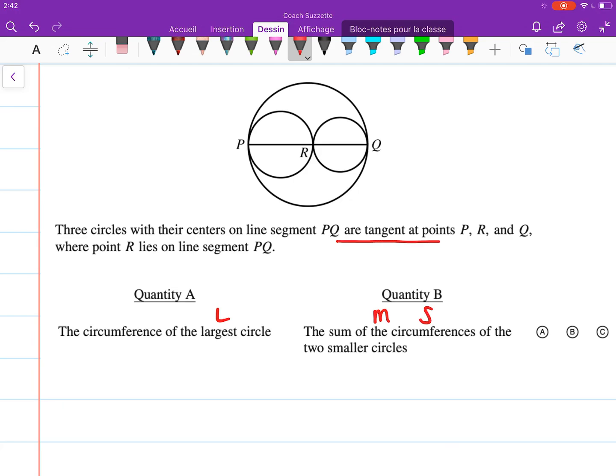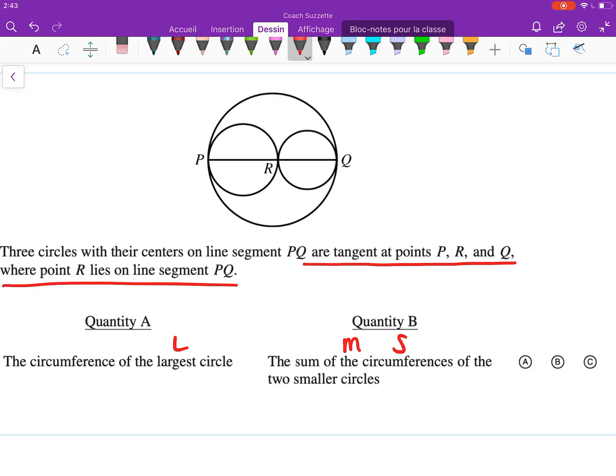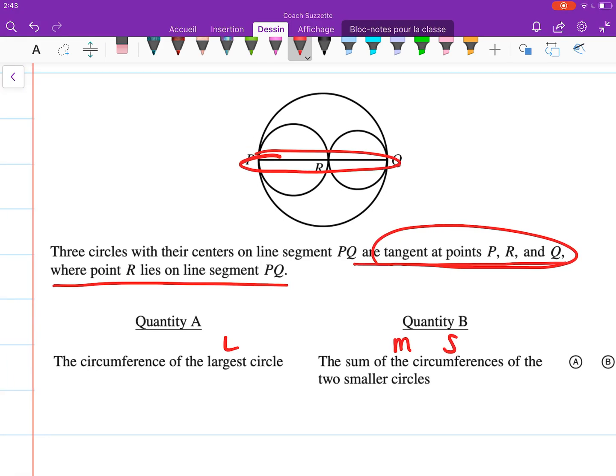What does all this mean? Tangent at points P, R, and Q, where point R is on this segment. That means there are no gaps here, which is important because if there were gaps, we wouldn't know the distance or length of certain pieces. R is on this segment, but we don't know whether it's in the center or whether it's the center of the largest circle.